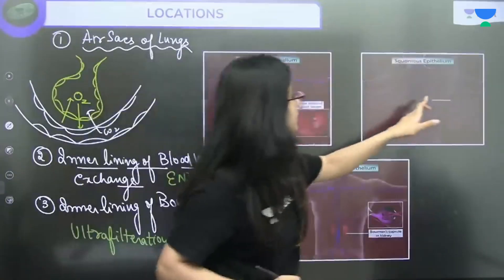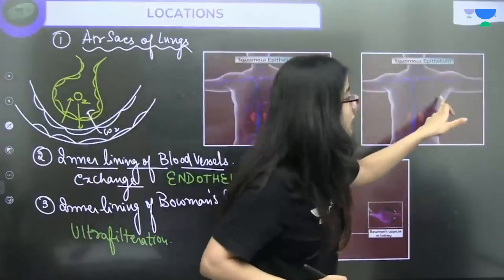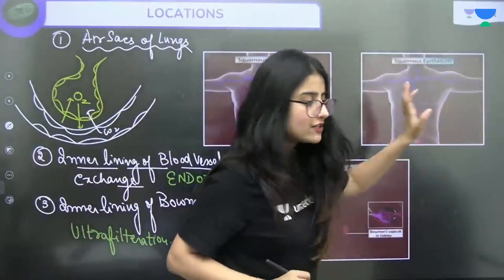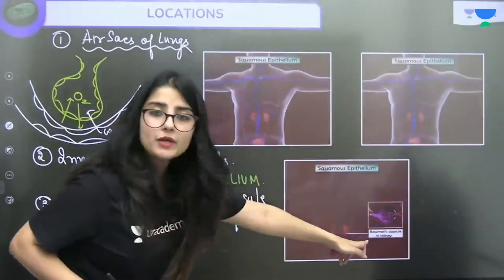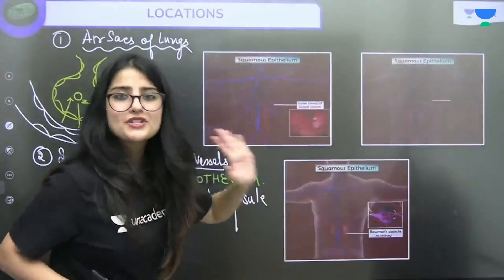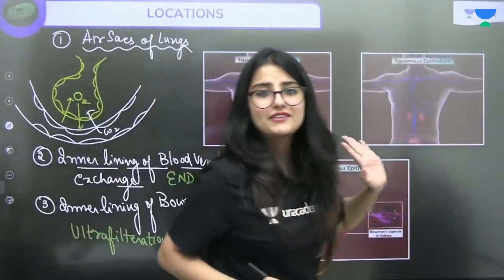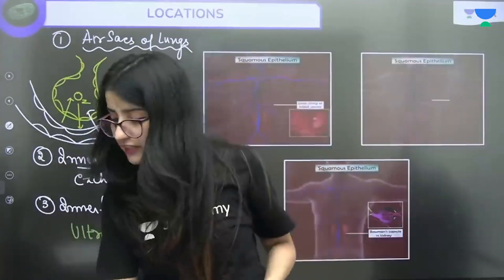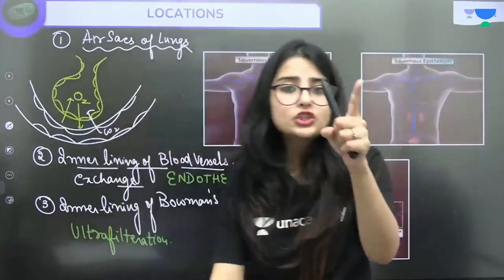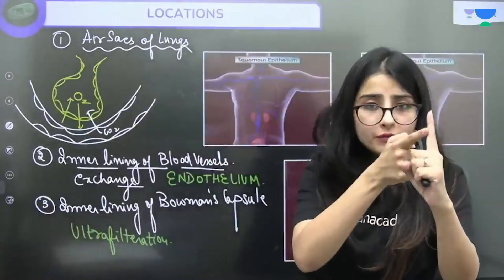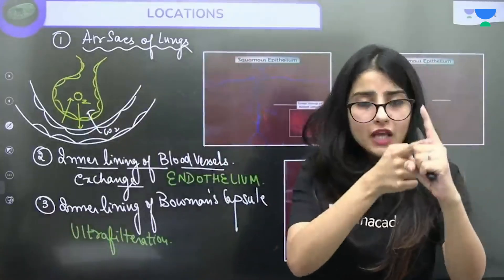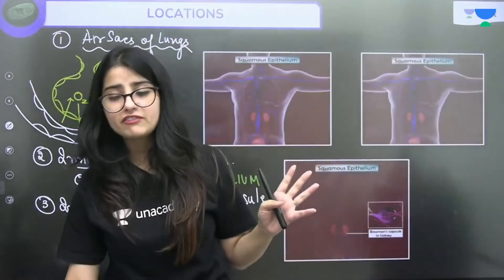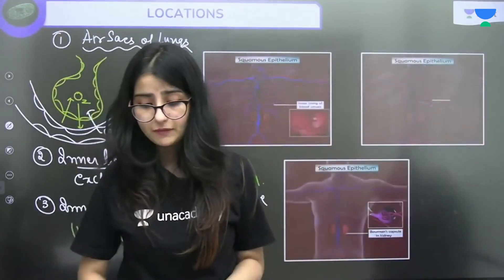This is the inner lining of the blood vessel, the elbow-like inner lining, ear sacs of the lung, and where it is present in your Bowman's Capsule — where it is called ultrafiltration. So this will be your squamous epithelium. Another name is endothelium, mesothelium, deciliated epithelium, and your pavement epithelium.